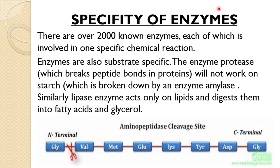Now, specificity of enzymes. There are over 2000 known enzymes, each of which is involved in one specific chemical reaction. In the human body, 2000 types of enzymes are present, each with a different function, and all these enzymes control the metabolic reactions of the body. Enzymes are also substrate specific.